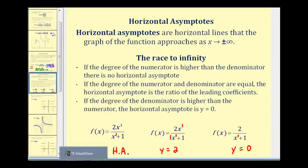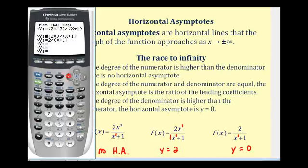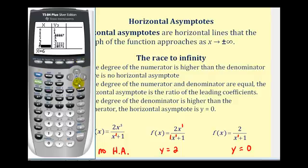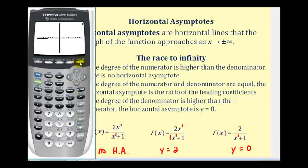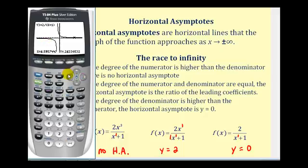Going back to the calculator with y three turned on and looking at the table, as x increases without bound the y values quickly approach zero. On the graph, as x approaches positive infinity to the right the function values approach zero, and they do the same approaching negative infinity to the left.